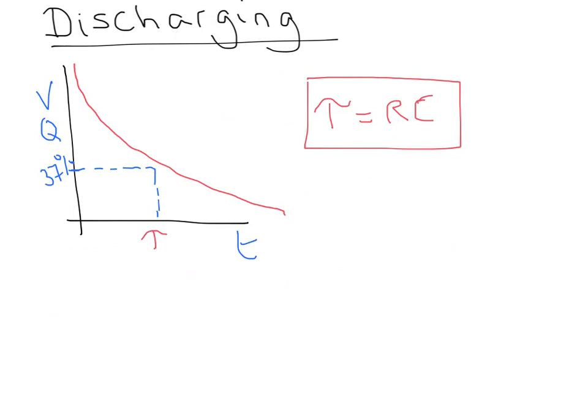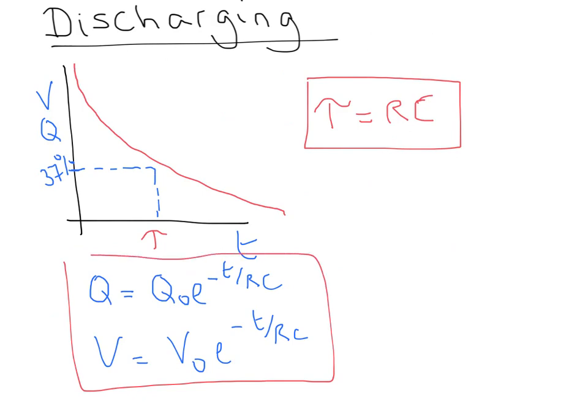Obviously there are different equations to explain what's happening. So if you want to know what the charge is at any given point, it's going to be your maximum charge times by the exponential of minus t over RC. Or in terms of V, it's going to be V is V zero e to the minus t over RC. So those are your discharge equations for capacitors.